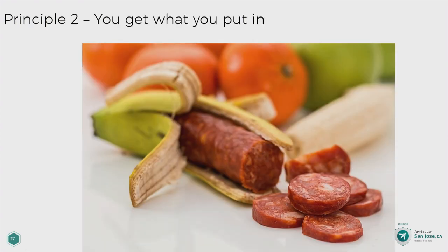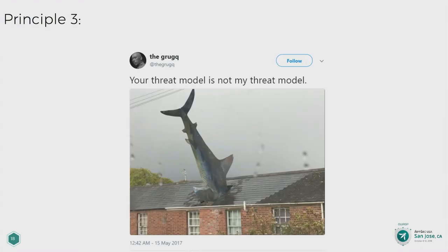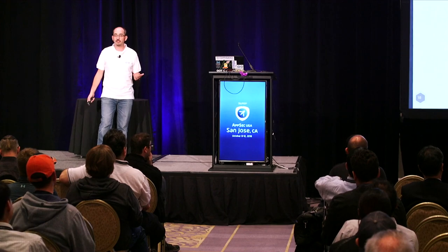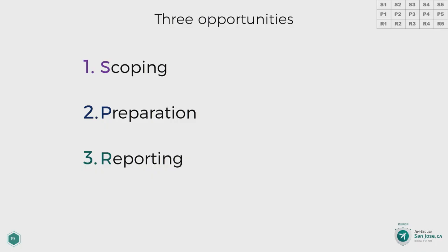Ultimately we get out what we put in. If we put good quality in, we'll get a good quality result. Everyone's application is different, everyone's company is different, and if we're getting a cookie-cutter test without thinking about it beforehand, we're not getting the right level of value. I've split the ideas into three stages: scoping — what do we want to test; preparation — how practically are we going to do it; and reporting — what are we going to get out at the end. Three stages, five ideas each. Let's dive in.